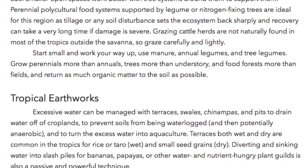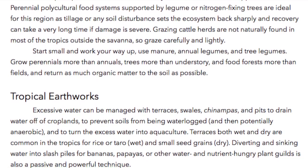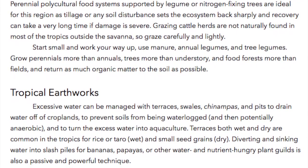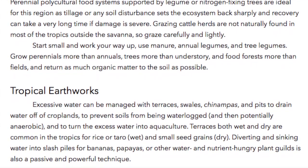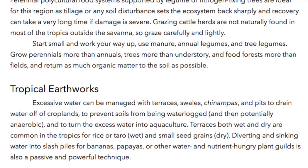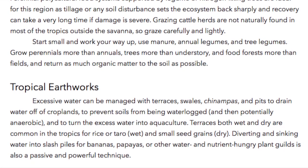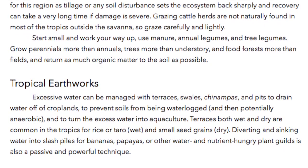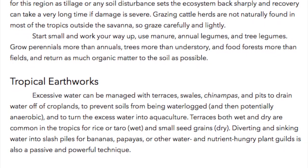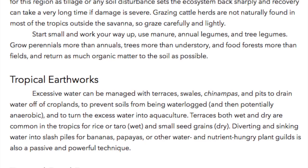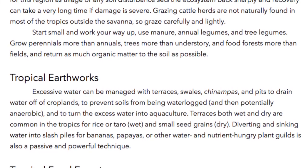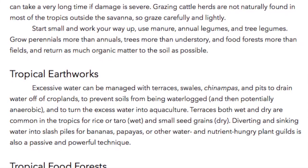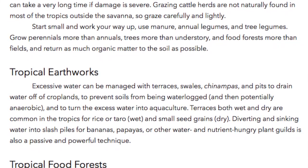Start small and work your way up. Use manure, annual legumes, and tree legumes. Grow perennials more than annuals, trees more than understory, and food forests more than fields, and return as much organic matter to the soil as possible.